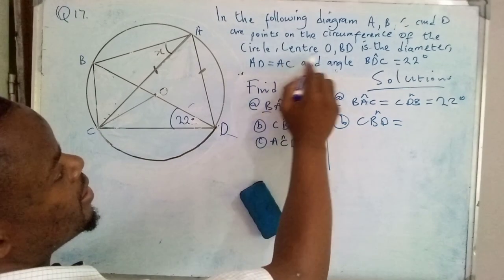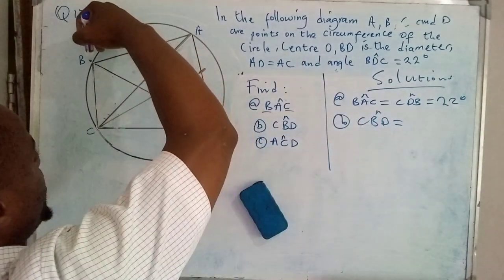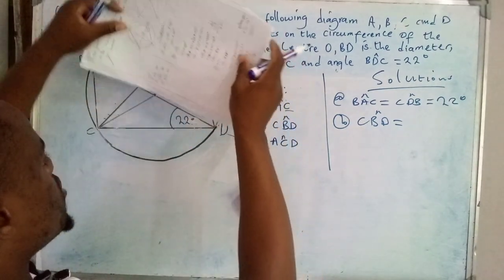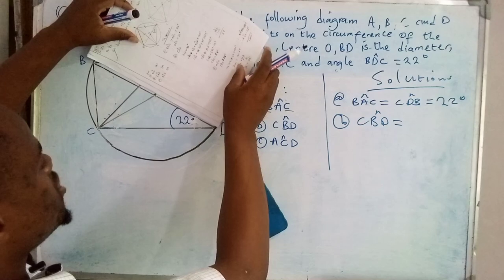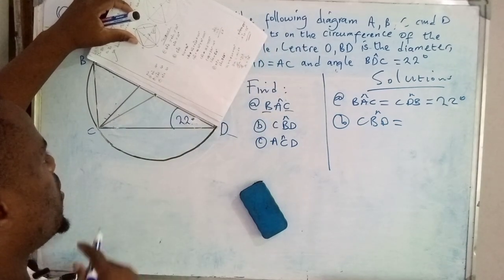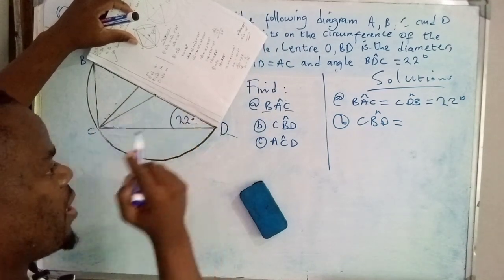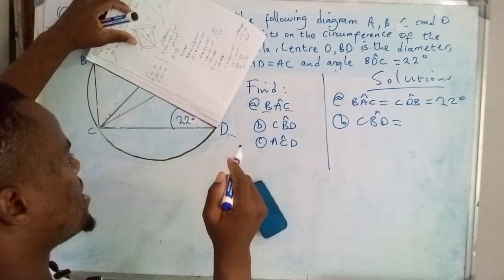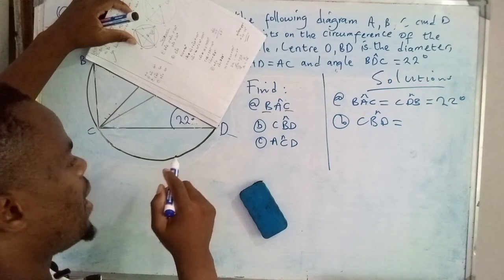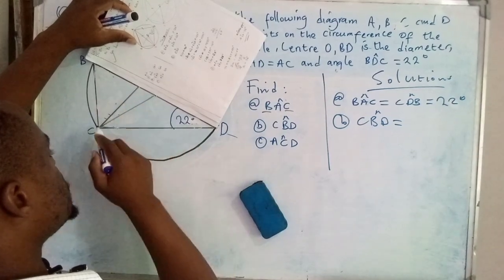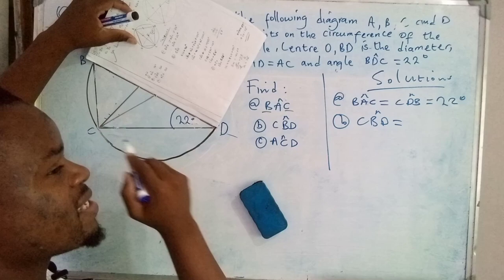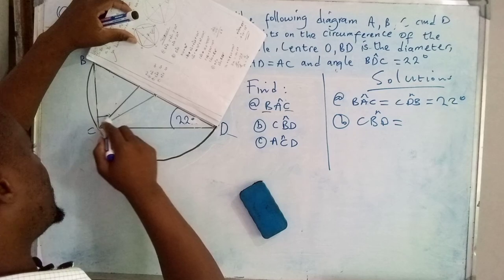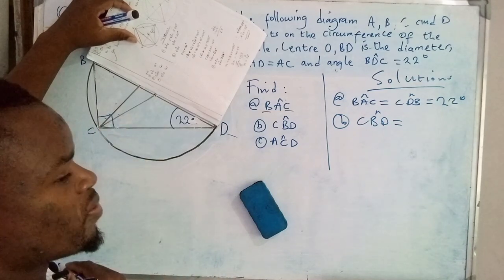They have said that BD is the diameter, this line here passing through the center. So what I want you to see is this triangle at the bottom here. You need to remember that property of a circle which says that an angle subtended onto the circumference by the diameter in a semicircle is equal to 90 degrees.